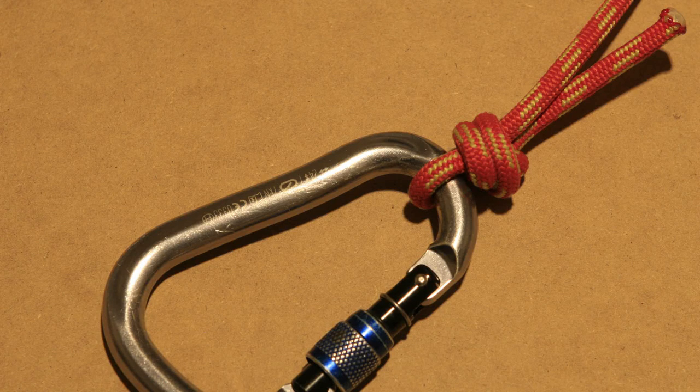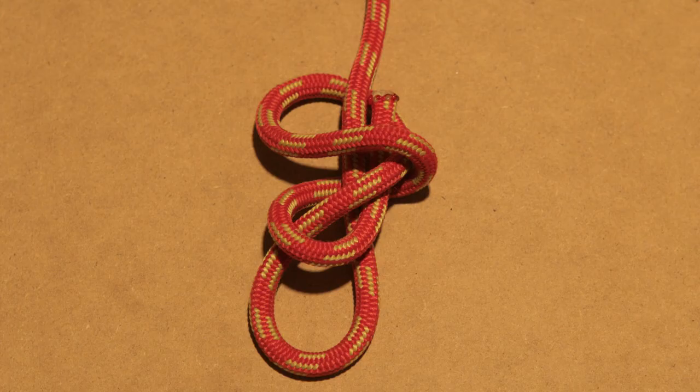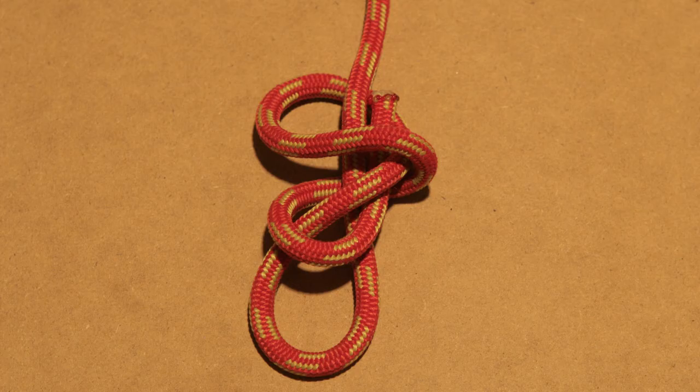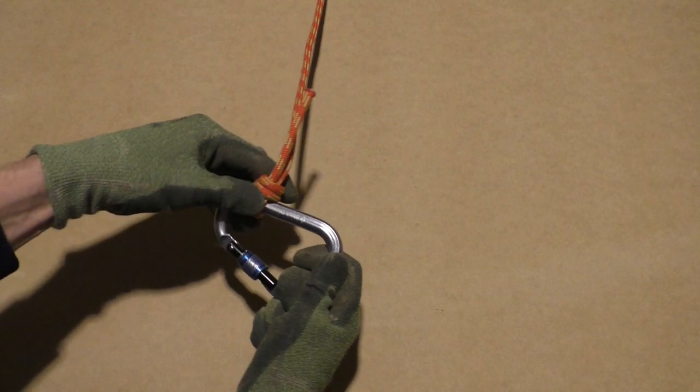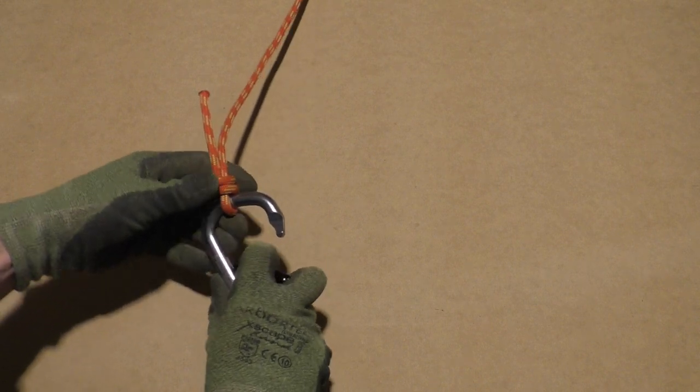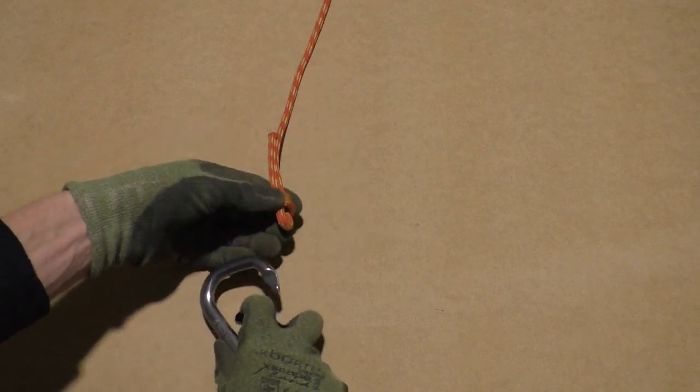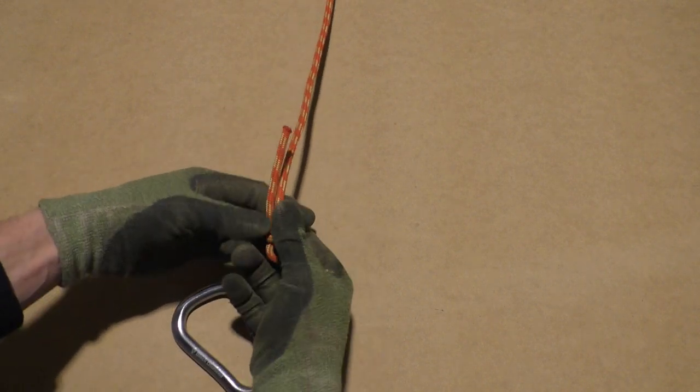The double fisherman's loop makes an excellent rope termination for lanyards and climbing lines. The double fisherman's knot is difficult to untie after loading and therefore it's recommended to use it only with carabiners, as they can be removed from the loop.